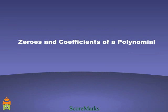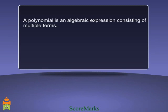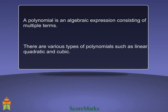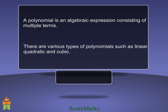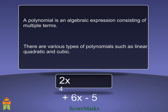Zeros and coefficients of a polynomial. A polynomial is an algebraic expression consisting of multiple terms. There are various types of polynomials such as linear, quadratic, and cubic. This is a polynomial with three terms.